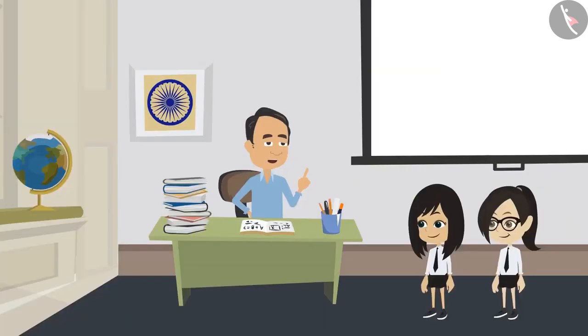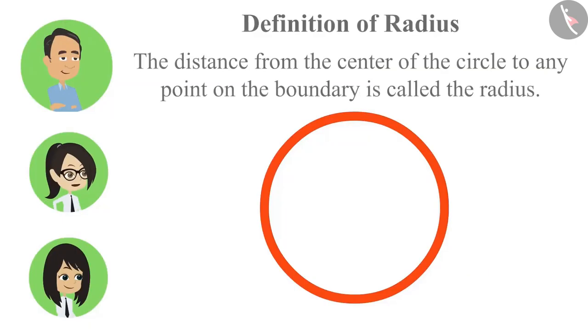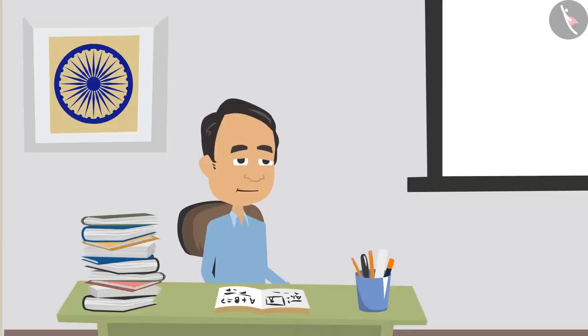No, you got it wrong. Tell me what is the radius. Sir, radius is the distance from the center to any point on the boundary of the circle. Absolutely correct. And how many points can there be on a circle?